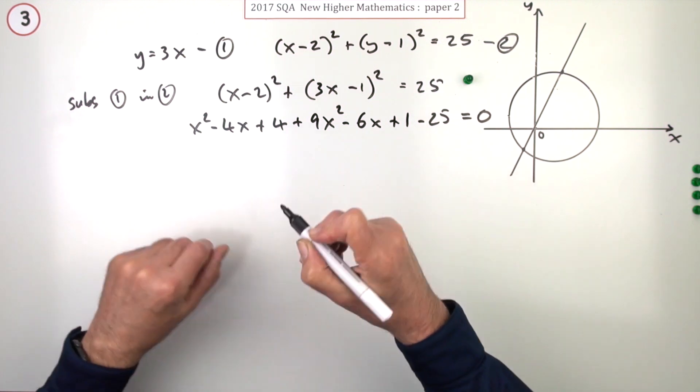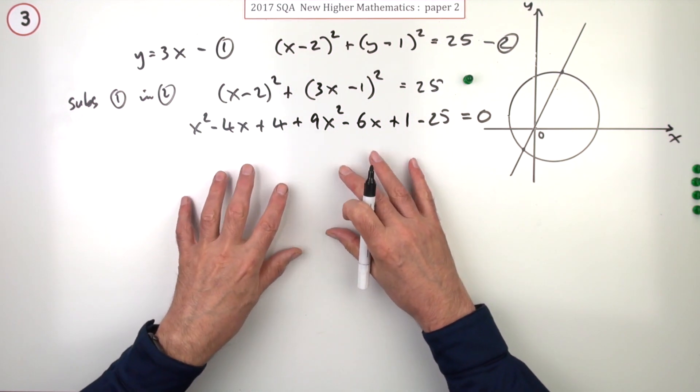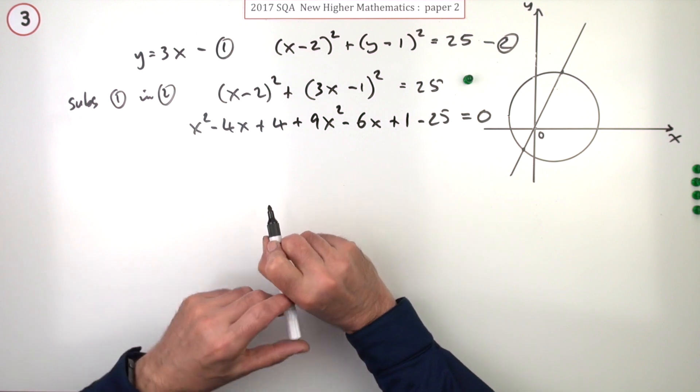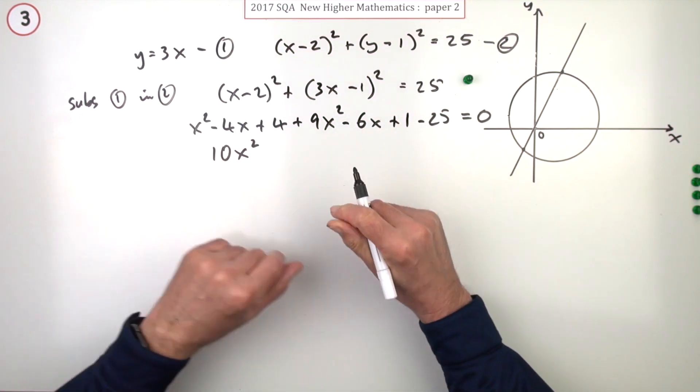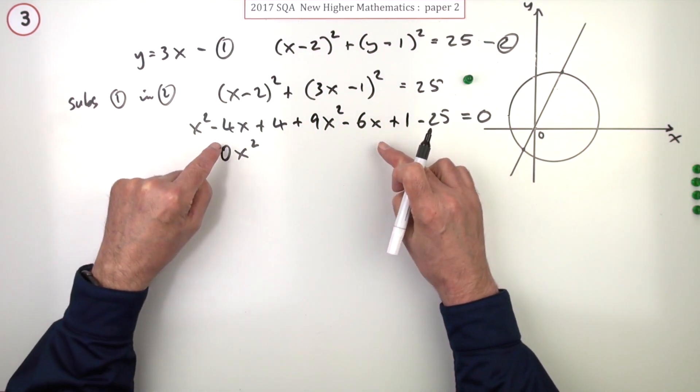Now you tidy up and hope that the numbers are favorable for factorization. You've got 10x², so if everything else is made up of fives or tens, it'll be fine.